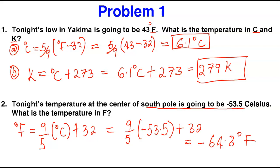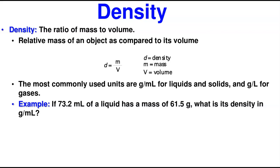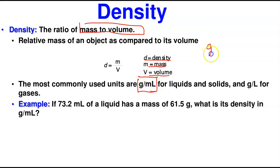Now we move on to density, which will take most of our time. Density can be defined as mass per unit volume of an object, or the ratio of mass to volume of any object. Mass is represented by m, volume by V, and density by d. It can be in any unit — what matters is that units cancel when using it for conversion. The most commonly used unit of density in the metric system is grams per milliliter (g/mL) for liquids and solids, and grams per liter (g/L) for gases.